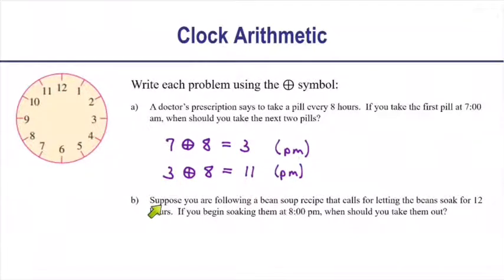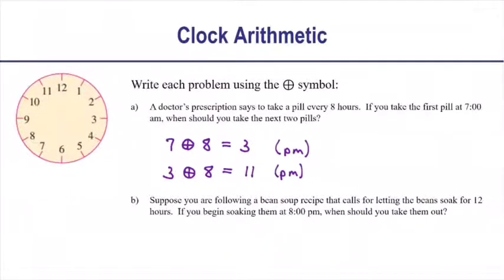Here's part B. Suppose you are following a bean soup recipe that calls for letting the beans soak for 12 hours. If you begin soaking them at 8 p.m., what time should you take them out? You probably already know the answer, but let's work through it. We write the problem as 8 circle-plus 12: we're starting at 8 and adding 12 hours. Let's count it on the clock face.